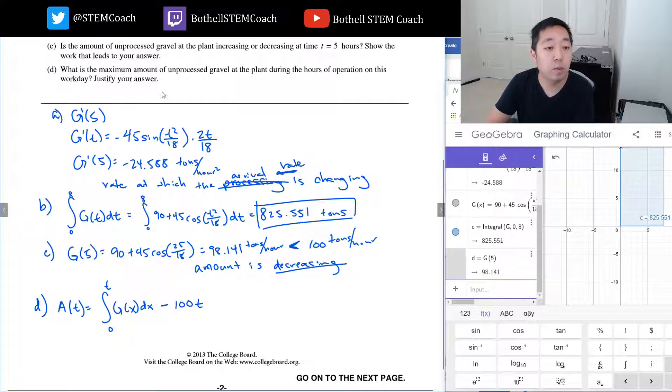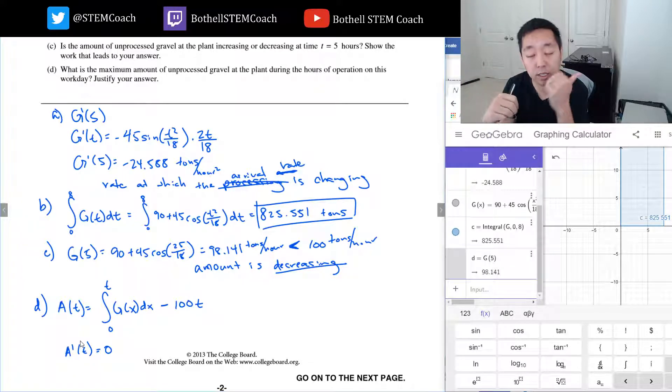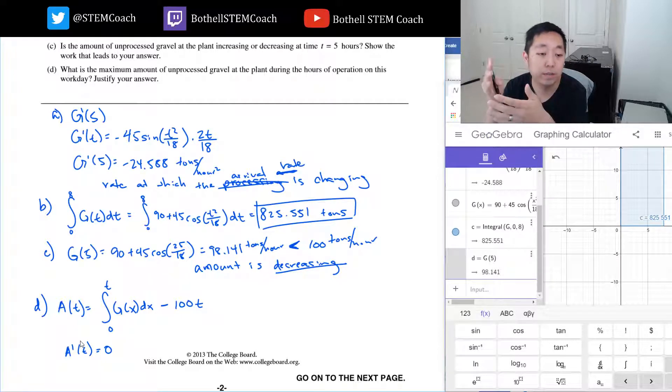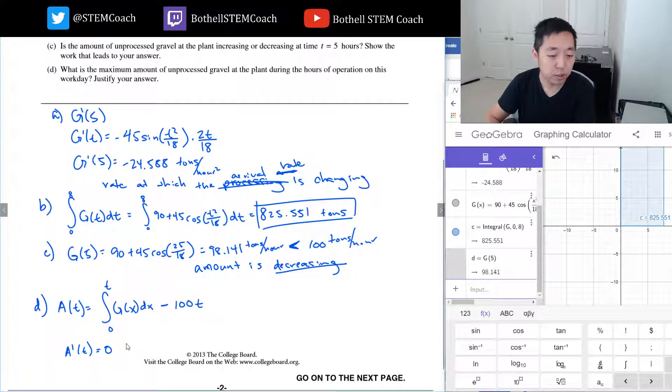So this is the amount of gravel that has arrived between zero and t. And then I have to subtract the amount that's been processed after t hours, which is 100 times t. When do I have the maximum amount? The maximum amount is when the derivative of A(t) is equal to zero. For the absolute maximum, I have to look at all potential relative maximums as well as check the endpoints.